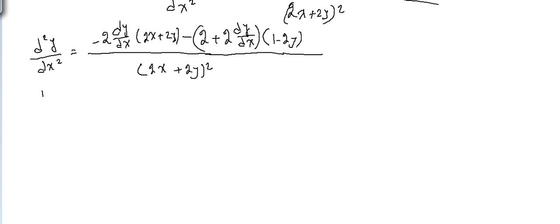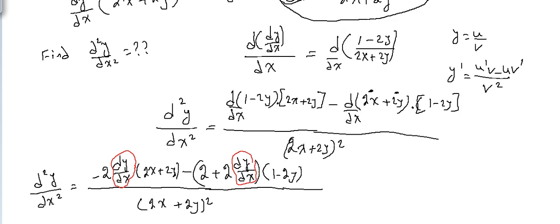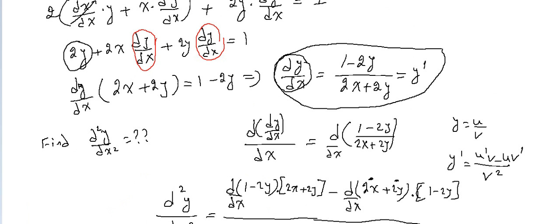This d²y/dx² will be equal to negative 2 times dy/dx. When finding d²y/dx², we substitute its value because we already have it — which is (1 - 2y) over (2x + 2y).